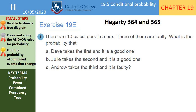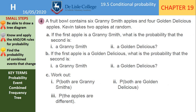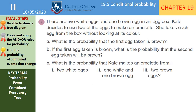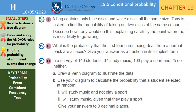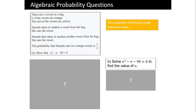You can have a go at questions from Exercise 19E, or complete Hegarty clips 364 and 365, depending on whether you prefer pen and paper or Hegarty. These are not compulsory this week — for the rest of your lessons this week, I want you to revise the overall probability work we've done and have a go at the knowledge organiser quiz. The answers are also on the PowerPoint.